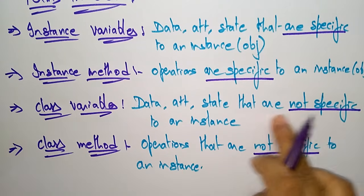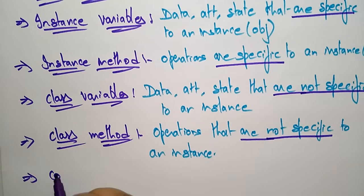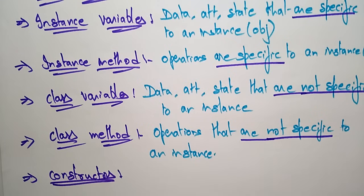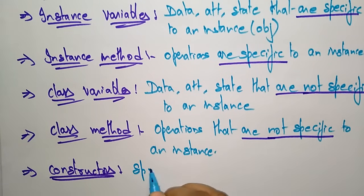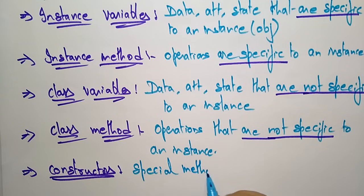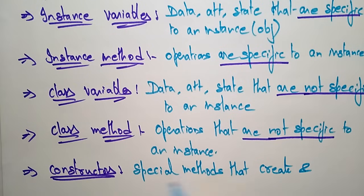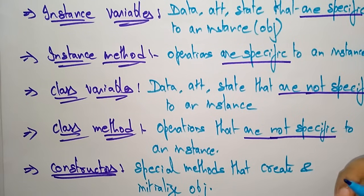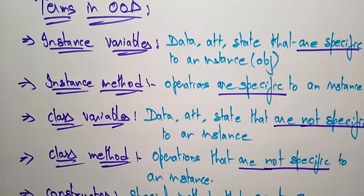The next term in object-oriented design is the constructor. A constructor is a special method that creates and initializes the object for a class to perform some operations. So this is about object-oriented design. Thank you.